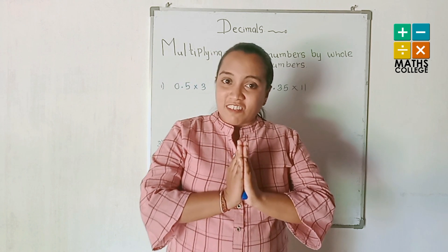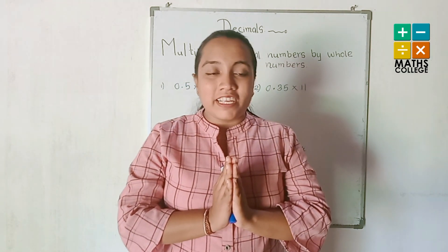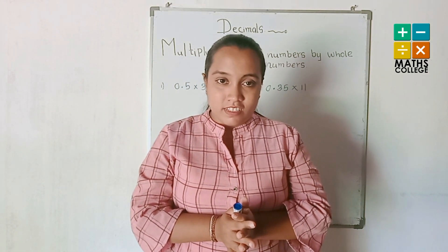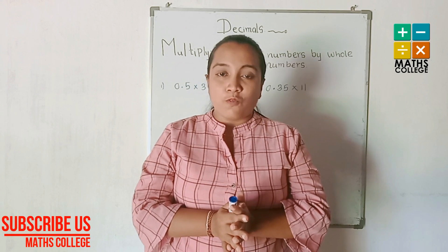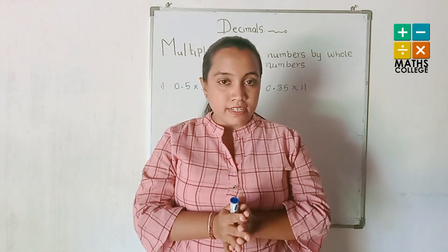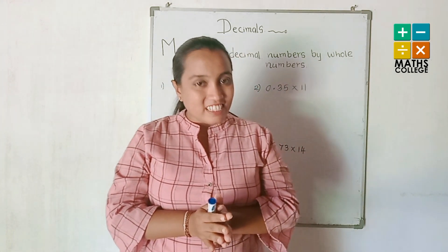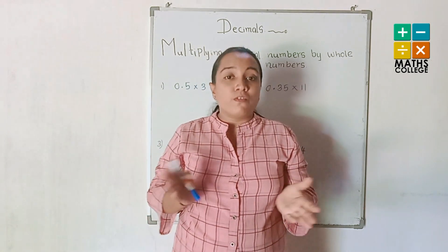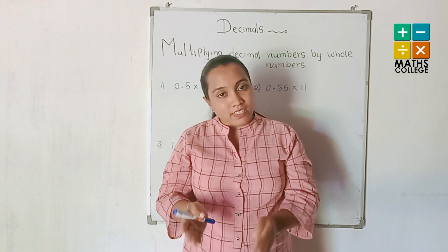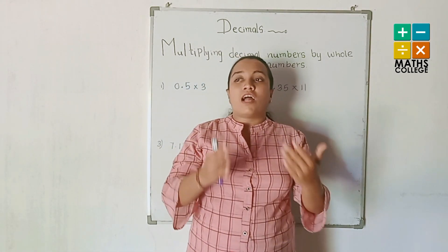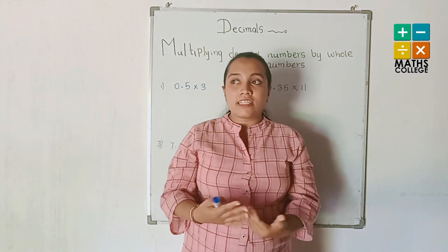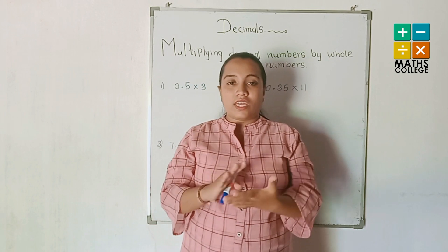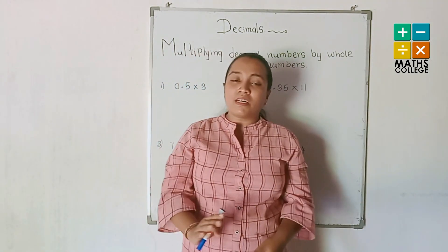Hello, welcome to our channel Maths College. Today I am ready to discuss the second part of the decimals lesson — the multiplication of decimal numbers by whole numbers. In mathematics, there are many types of numbers: fractions, decimals, and whole numbers. Whole numbers are 1, 2, 3, 4, 5, 6, 7, 8, and so on — numbers greater than zero.